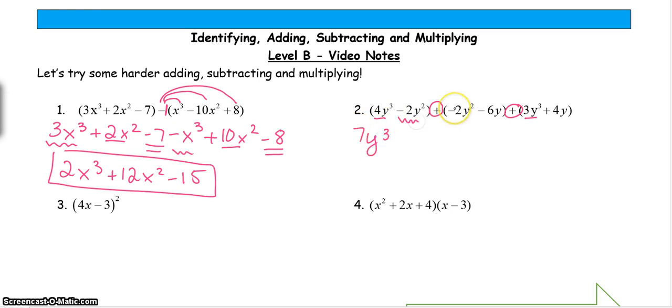I've got -2y² and -2y², so that gives me -4y². And I've got -6y + 4y, which gives me -2y.